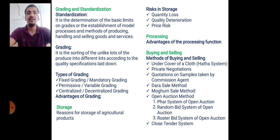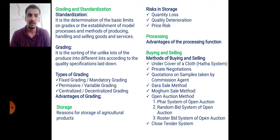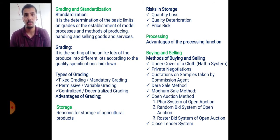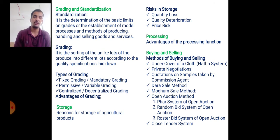Buying and selling is a transaction or exchange of goods with money. The different methods of buying and selling are: under cover of cloth, also called the hatha system; private negotiation; quotation on samples taken by commission agents; dara sale method; mogam sale method; and open auction method. In open auction there are three sub-methods: pahar system, random bid system, and roaster bid system of open auction.